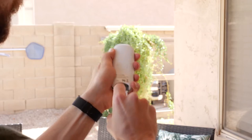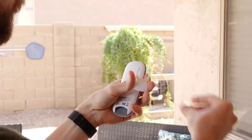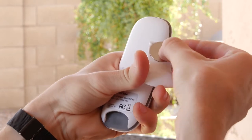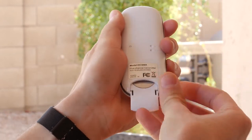The first step to setting up and using the remote is to insert the battery that came with it. Just slide off the back cover like this and put it in, making sure the positive side faces the back of the remote.